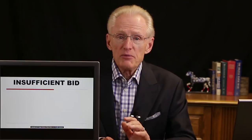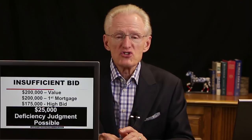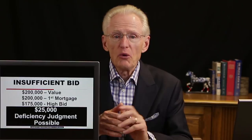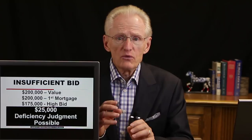If the bid is insufficient — for example, the high bidder bids $175,000 on a property with a $200,000 first mortgage — there's a deficiency of $25,000. The lender could go back into court and ask the judge to issue a deficiency judgment against the borrower for that $25,000. We'll talk more about deficiency judgments later in this lesson.